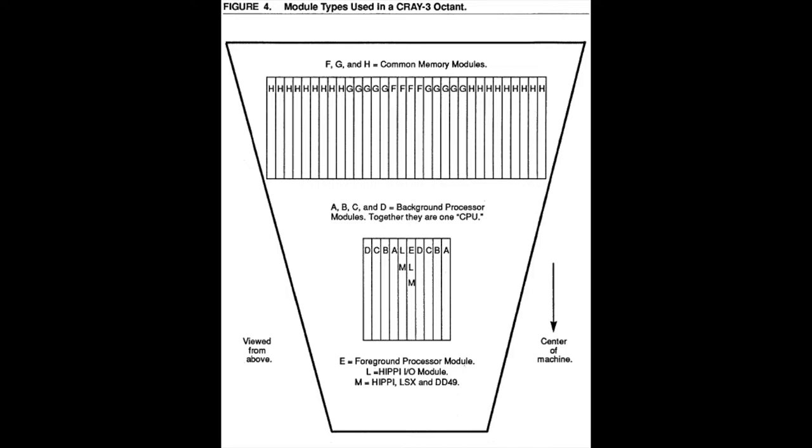Common memory consisted of silicon CMOS SRAM organized into octons of 64 banks each, and up to 8 octons possible. The word size was 64 bits, plus 8 error correction bits, and a total memory bandwidth was rated at 128 gigabytes per second.